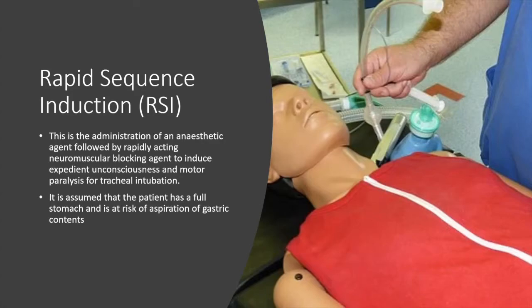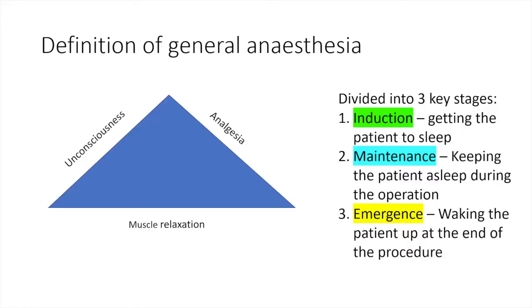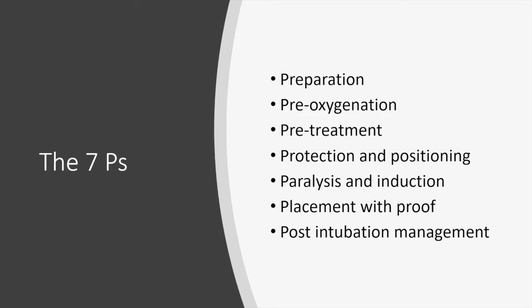Welcome to this free anaesthetic tutorial on the rapid sequence induction. This tutorial is aimed at trainees who have just begun their anaesthesia training. The RSI is a key tool in the anaesthetist's ability to secure safe endotracheal intubation in patients at risk of aspiration of gastric contents. The rapid sequence induction describes the administration of an anaesthetic agent followed by a rapid acting neuromuscular blocking agent which induces unconsciousness and motor paralysis as quickly as possible. To make the process easier, we have divided it into seven key components — the seven P's — and I will explain each in turn.